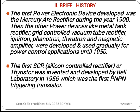Now we will go through the brief history of power electronics. The first power electronics device was the mercury arc rectifier, developed in 1900. Other power devices like metal tank rectifiers, grid-controlled vacuum tube rectifiers, thyratrons, and magnetic amplifiers were developed and used gradually for power control applications until 1950. That was the first revolution of power electronics.